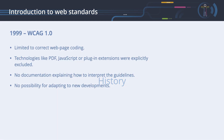History. To understand why there are different versions of the Web Content Accessibility Guidelines, we have to look at their history. WCAG 1.0. Version 1 of the Web Content Accessibility Guidelines was published in 1999. The different guidelines were limited to the description of correct web page coding. Technologies like PDF, JavaScript, or plug-in extensions such as Java applets, Shockwave or Flash were explicitly excluded. There was no documentation explaining how to interpret the guidelines, no example code, leaving a lot of room for different interpretations and implementations. There was no possibility for adapting to new developments, meaning it was quickly technically outdated.